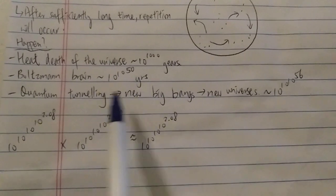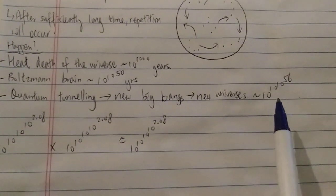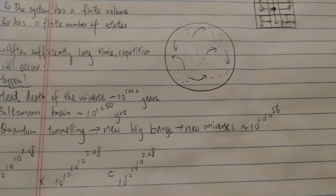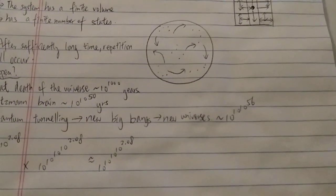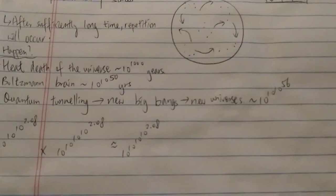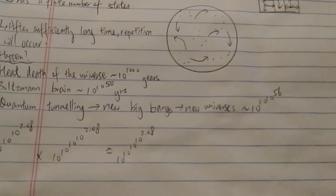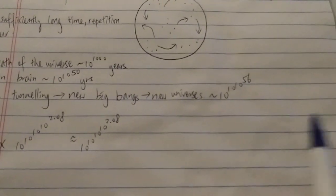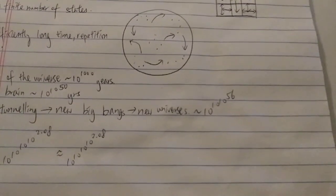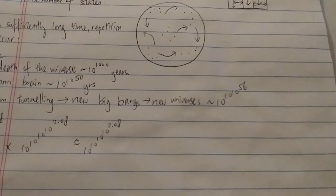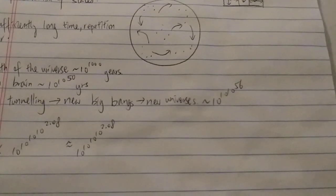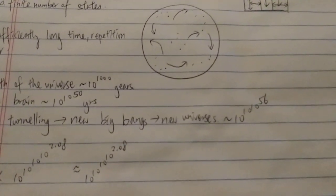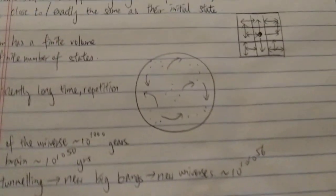The creation of new universes through quantum tunneling might itself be considered similar to a recurrence, because the number of ways all sub-atomic particles can arrange in our observable universe is around 10 to the 10 to the 118. Due to the power tower rounding effect, that number multiplied by the recurrence time is basically the same number — meaning a new universe exactly the same as ours would occur, which already kind of fulfills the Poincaré recurrence, and it happens way before the Poincaré recurrence time.